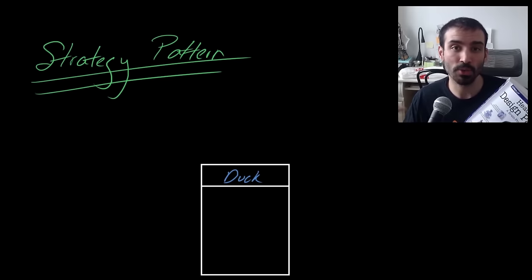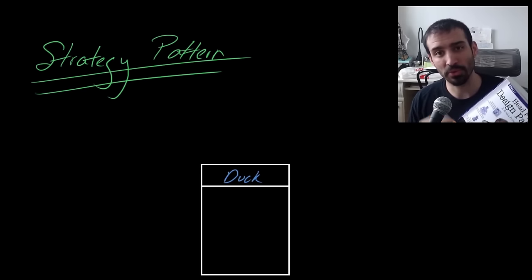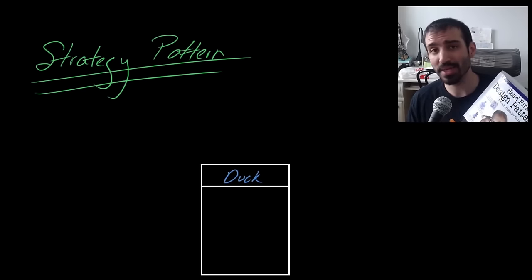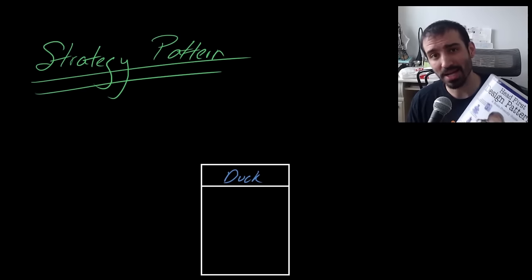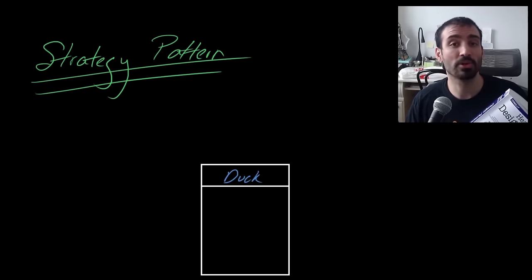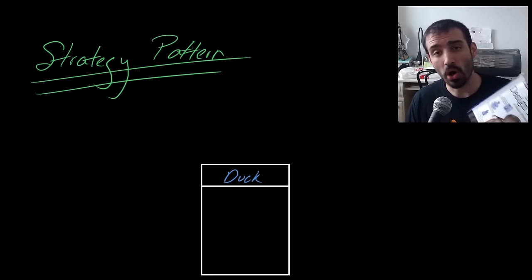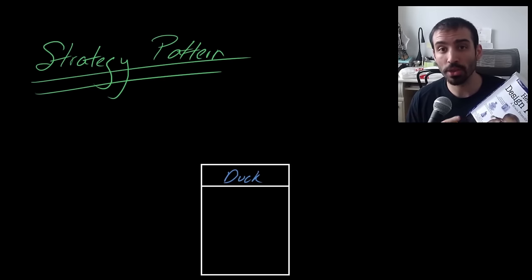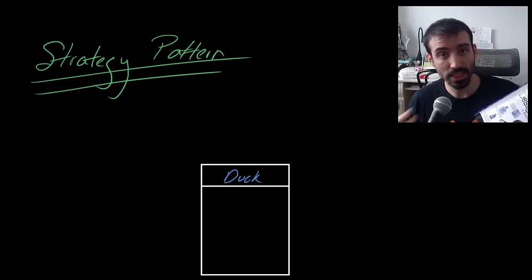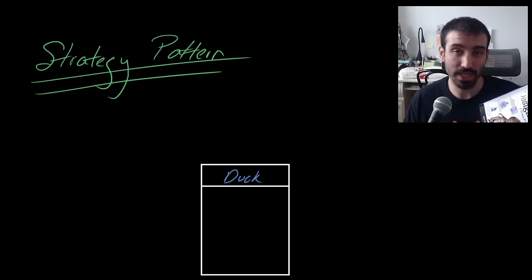Head First Design Patterns is a different way of teaching the same material. The original Gang of Four book is very tough to get through, very theoretical in nature. This one is a lot easier to read, with much more realistic examples applicable to everyday life. In this series, we're going to be talking about all the design patterns in this book, going through them one by one. In this video, we start with the first one: the strategy pattern.